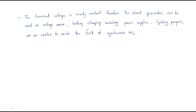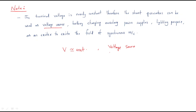An important note: the terminal voltage of the DC shunt generator is nearly constant — there is some drop, but it is very small. Therefore, the shunt generator can be used as a voltage source. This makes it suitable for applications such as battery charging and auxiliary power supplies.